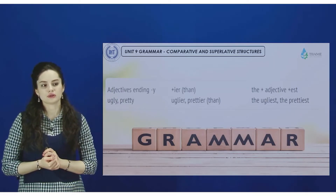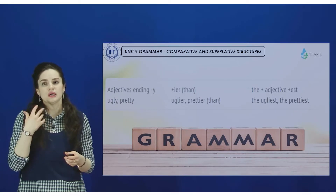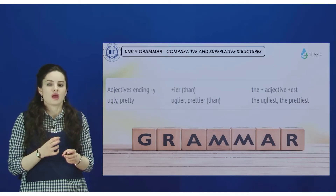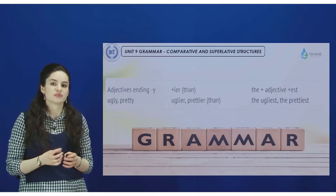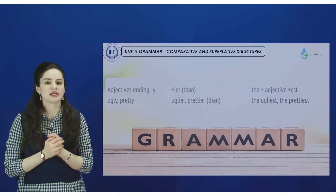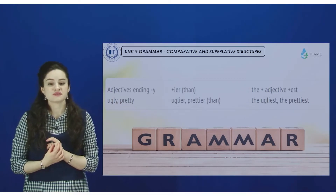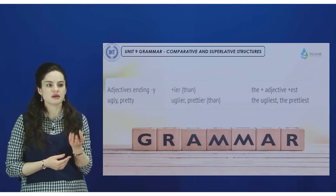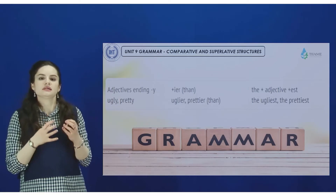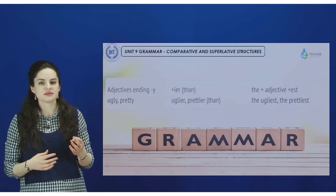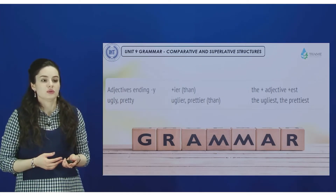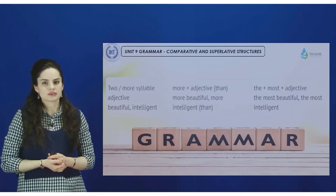If you have a word ending in the letter Y — for example, 'ugly' or 'pretty' — you will notice some changes. Instead of Y, the letter I is used. So the -er ending is still added, but the Y becomes I: for example, prettier. The same applies to the superlative -est ending: prettiest.